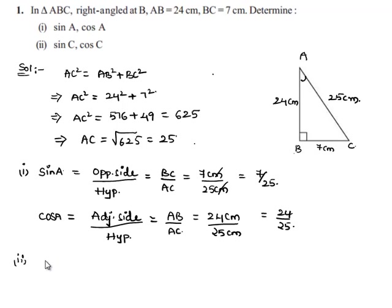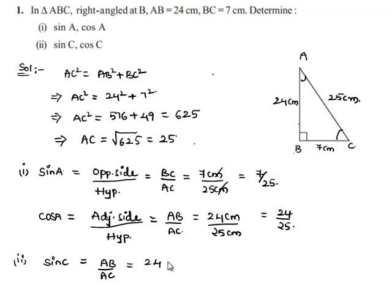Moving on to the next part, we are asked to find the value of sin C. We know that sin of an angle is opposite side by hypotenuse. The side opposite to angle C is AB and the hypotenuse is AC. So sin C = AB/AC = 24/25.